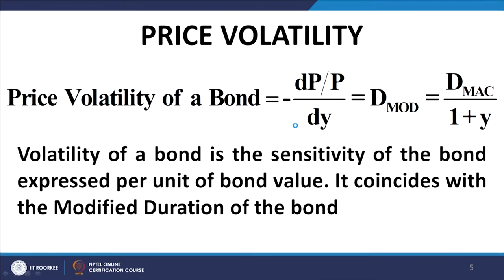The volatility of a bond coincides with the modified duration of the bond. It is the percentage change in the value of the bond corresponding to a unit change in YTM, with a negative sign.